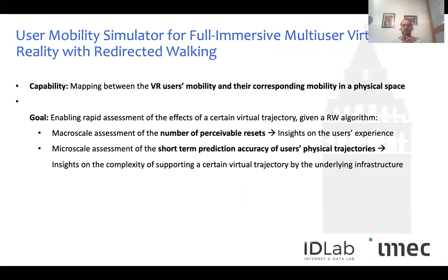Based on these observations, we see a clear need for a simulation tool that maps virtual reality users' trajectories in unconstrained virtual worlds to their consequent mobility in constrained physical setups. The main goals are enabling rapid assessments at two scales: the macro scale — assessing the number of perceivable resets experienced by each user, giving insight to VR application designers — and the micro scale — short-term prediction accuracy of users' physical trajectories.